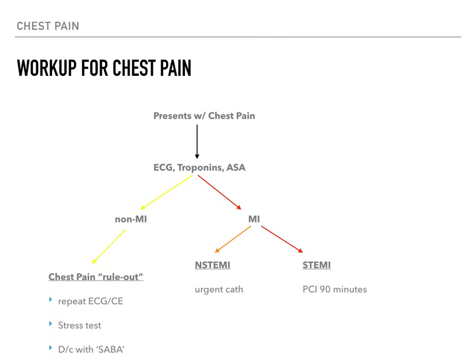That's our rapid review of chest pain. This was a bit more clinically focused than some other videos, but chest pain and myocardial infarctions are being tested more clinically on boards — even at Step 1 — because of how prevalent coronary artery disease is in the United States. When studying, make sure you can differentiate stable angina from unstable angina and the different types of MIs, because on boards it will be presented through a differential. Good luck.